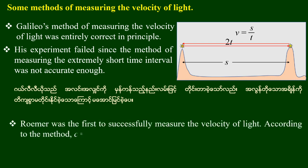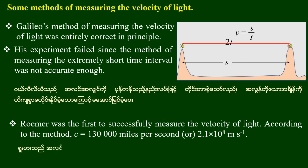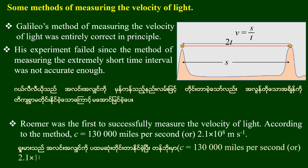Römer was the first to successfully measure the velocity of light according to this method. C is equal to 130,000 miles per second, or 2.1 × 10⁸ meters per second. Römer was the first to successfully measure the velocity of light. C is equal to 130,000 miles per second, which is 2.1 × 10⁸ meters per second.